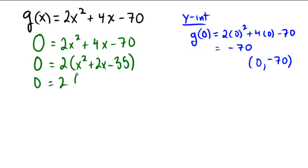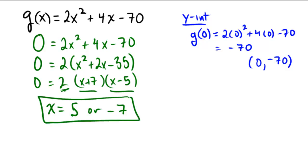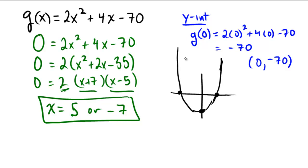Can you think of two numbers that add to 2 and multiply to negative 35? That would be x + 7 and x − 5. So our x solutions are x = 5 and x = negative 7. The factor of 2 gives nothing since 2 is never equal to zero. So the x-intercepts are at 5 and negative 7. A rough sketch of the graph goes through negative 70 on the y-axis, 5 on the x-axis, and negative 7 on the x-axis.